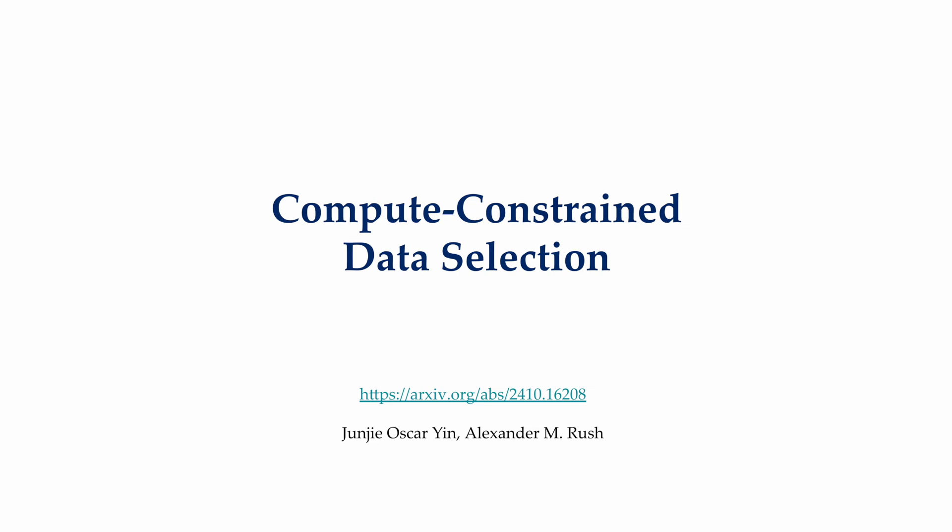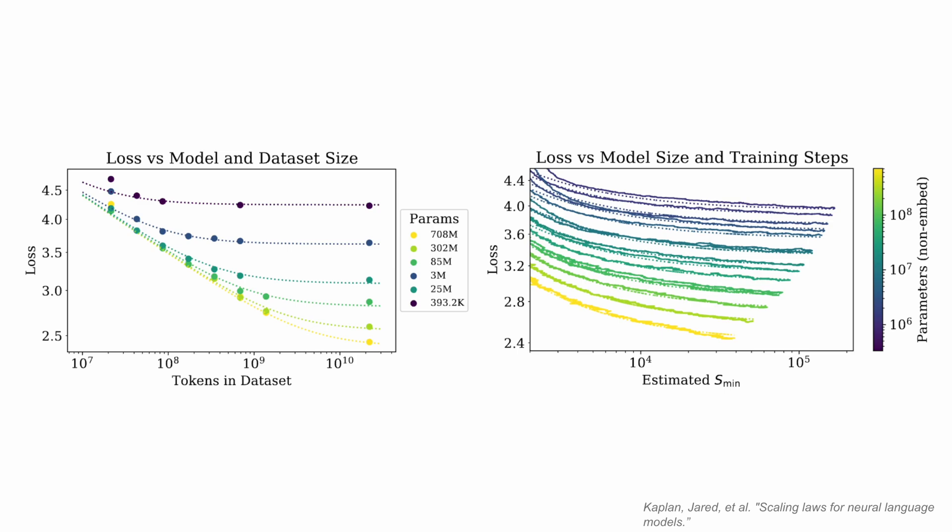This talk is about the problem of how you should use data selection to better train or fine-tune a language model if you only have a limited compute budget. In the paper, we termed this the compute-constrained data selection.